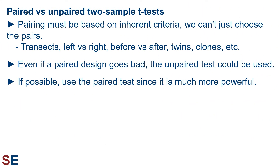A few things to keep in mind when doing paired t-tests: pairing must be based on inherent criteria — we can't just choose the pairs. We looked at examples where pairing was forced by transects, left versus right, and before and after, but studies using twins or clones also qualify. Even if a paired design goes bad, the unpaired test could be used as a backup. If possible, use the paired t-test since it's much more powerful, and scientists go out of their way and spend lots of money to design paired experiments.